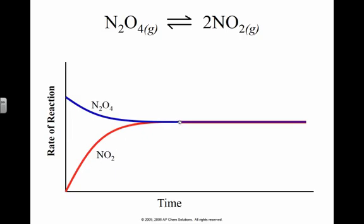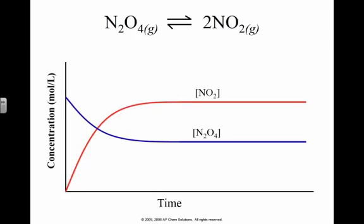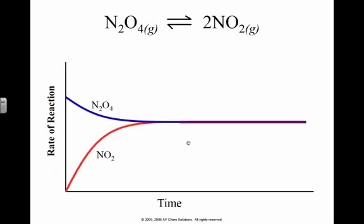So chemical equilibrium: forward and reverse reactions continue to take place. The rate of the forward reaction is equal to the rate of the reverse reaction. The concentrations aren't equal. If you'll remember back here, the concentrations were not equal for the reactants and the products; the reaction rate was equal.